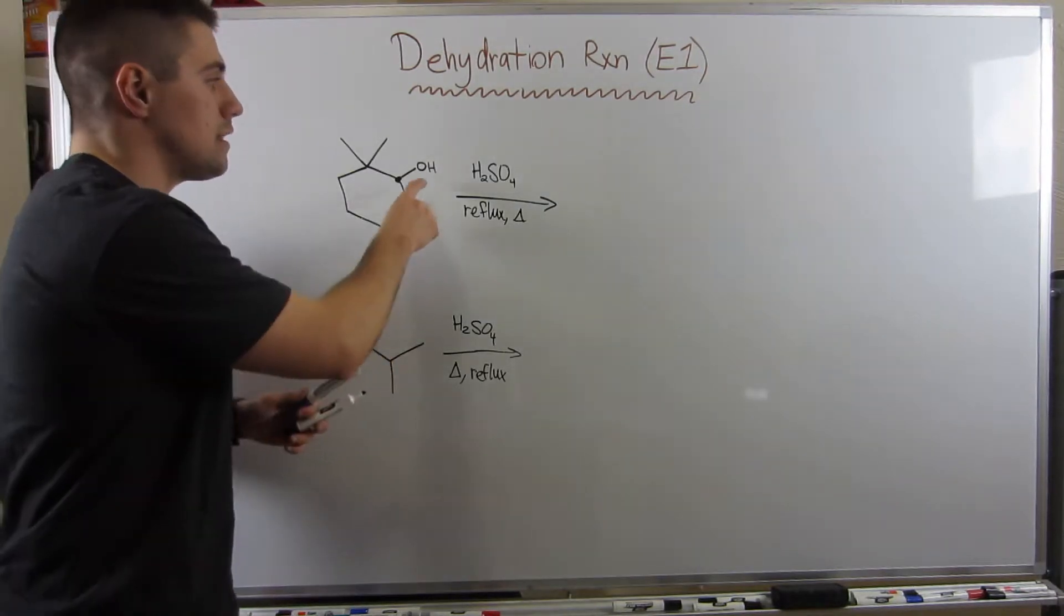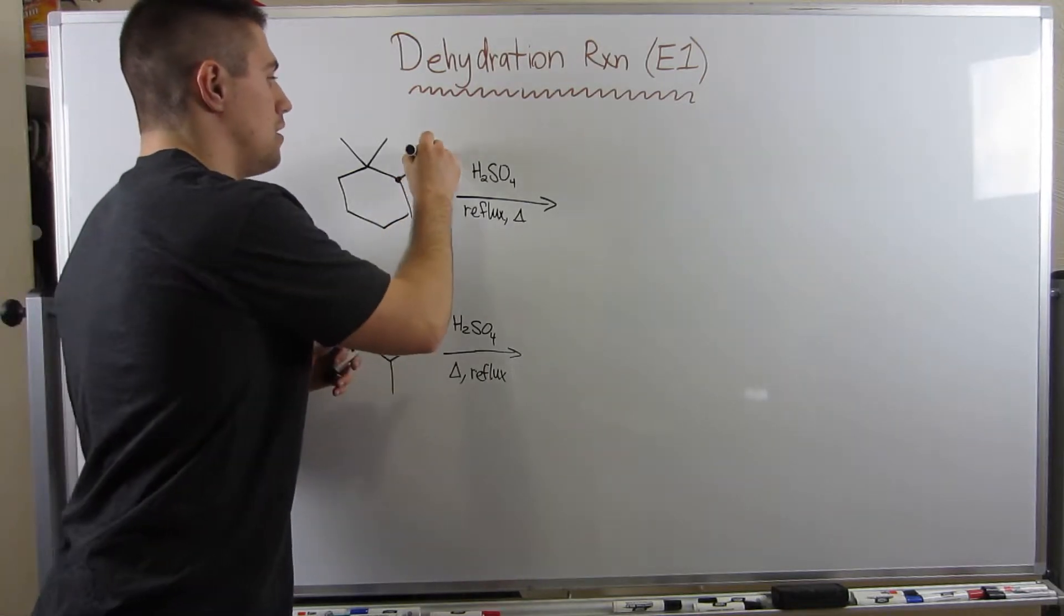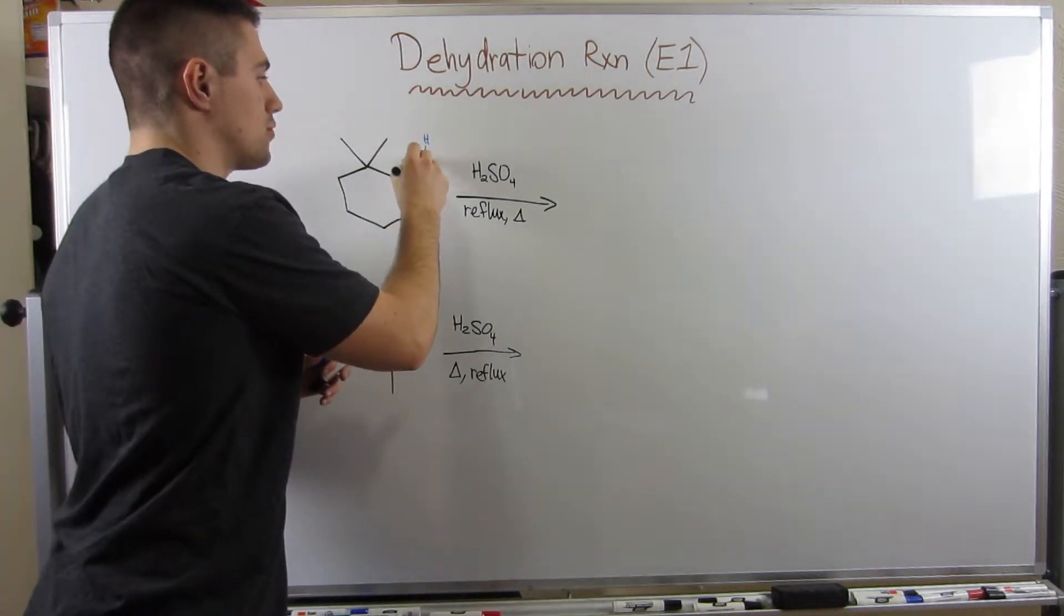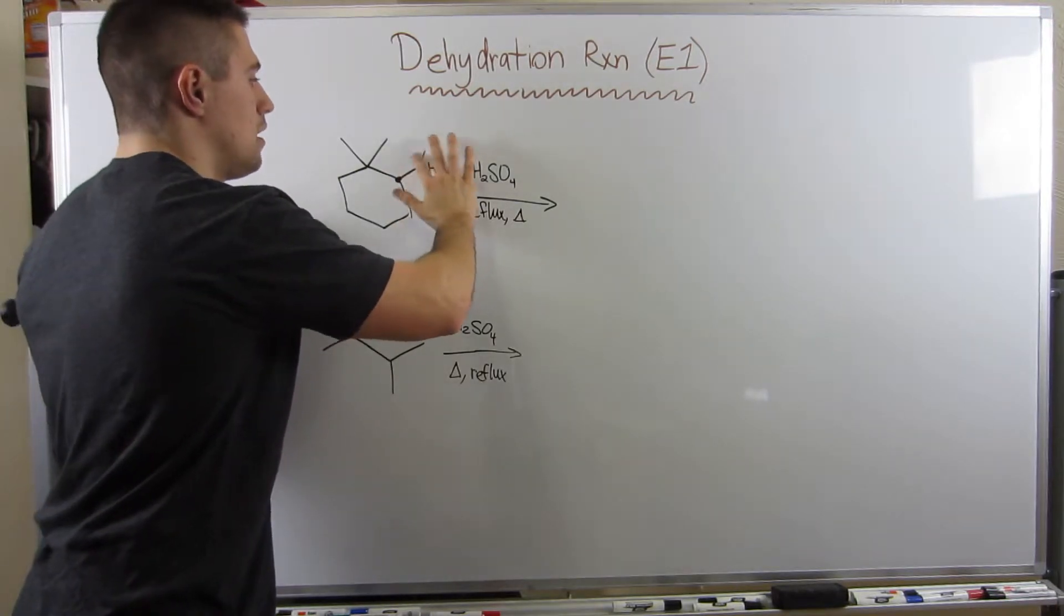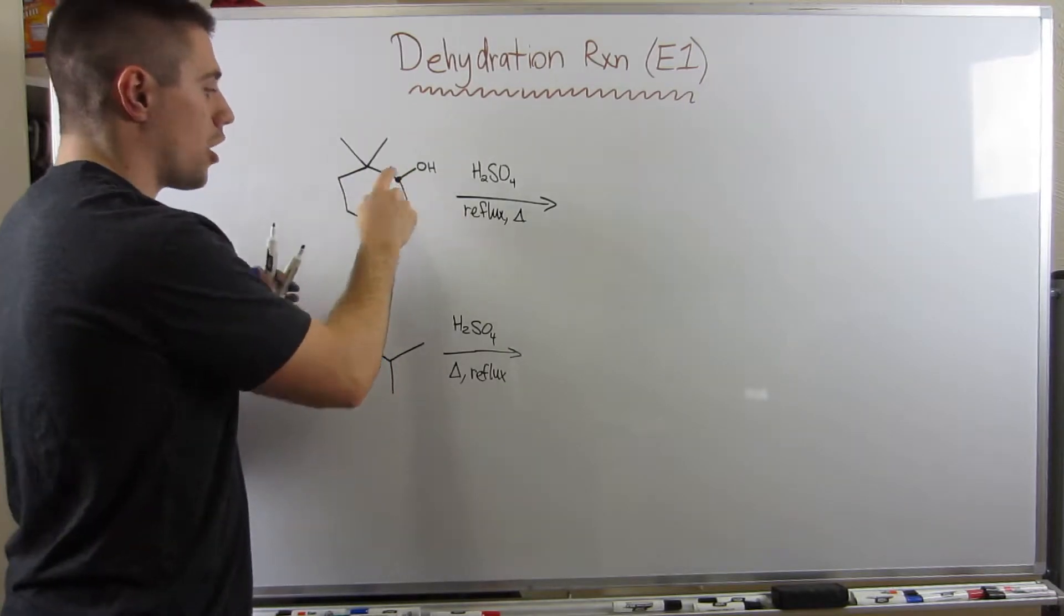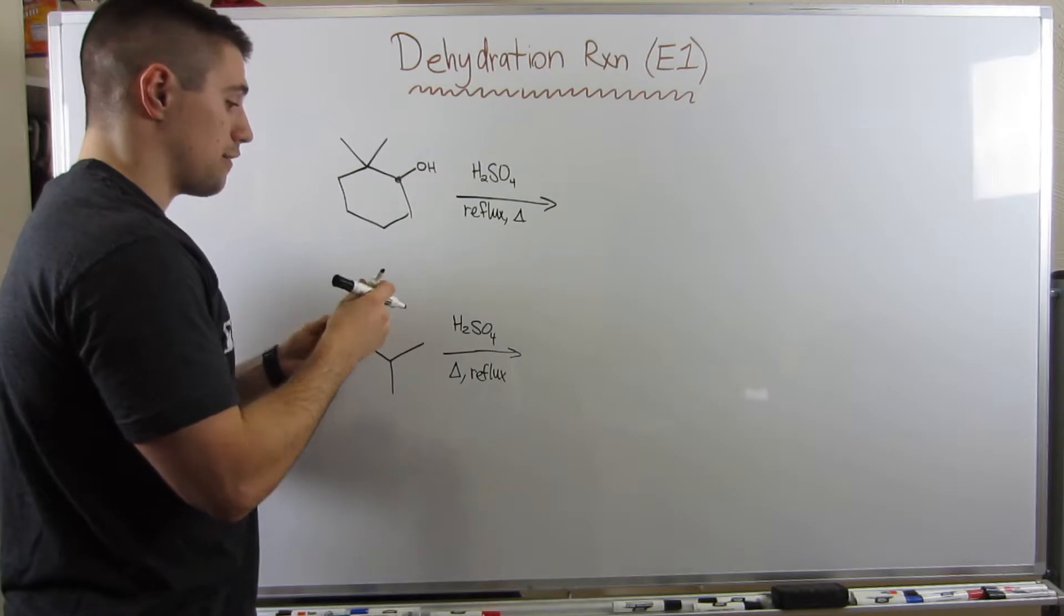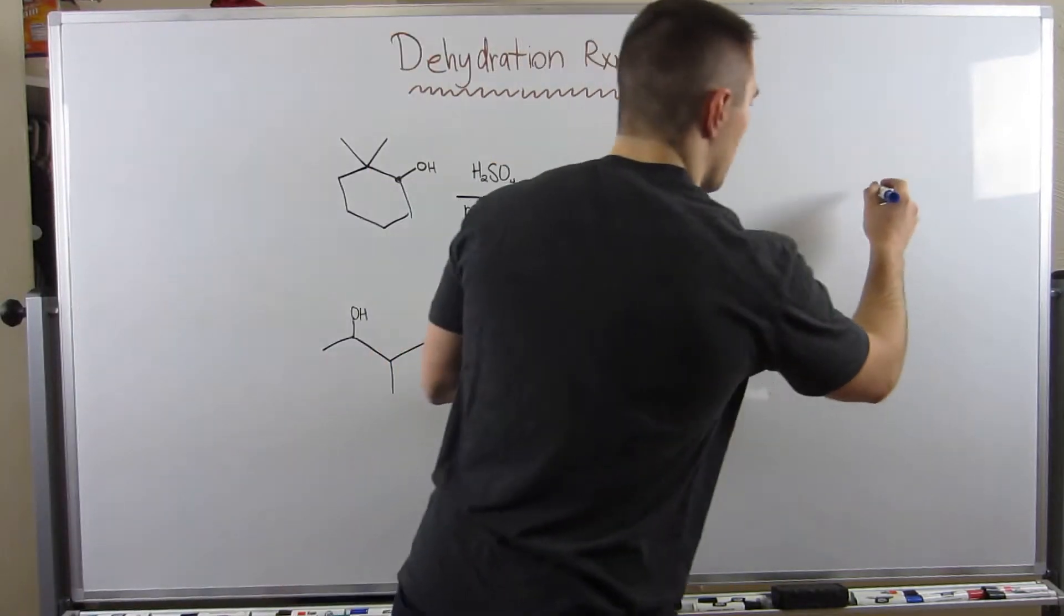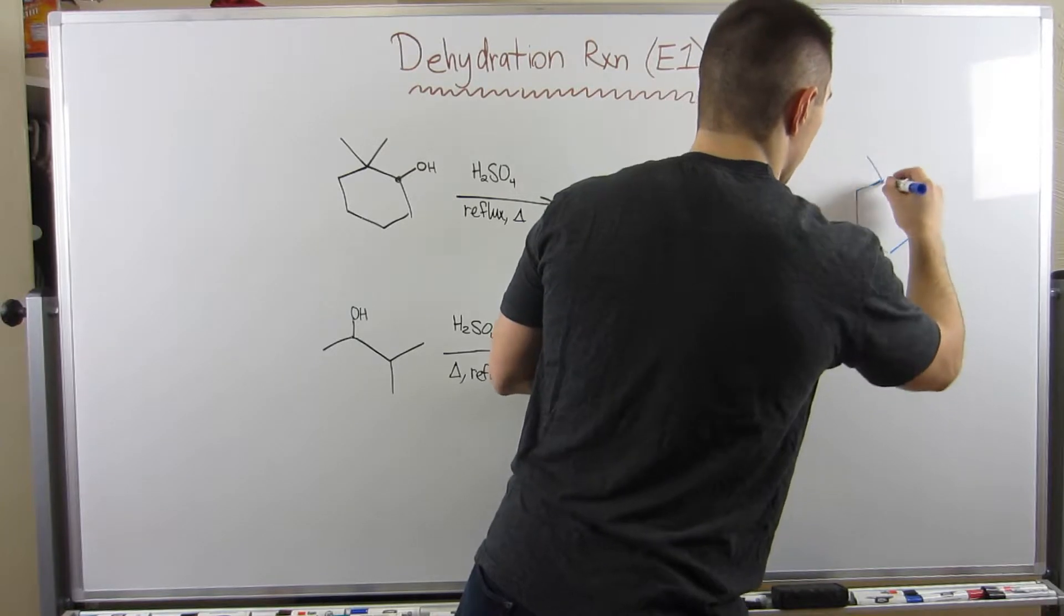You can see we have this secondary substrate, which could form a good carbocation attached to an alcohol. Then we have H2SO4 reflux and heat. We think to ourselves, ah, classic dehydration reaction going to give us some type of elimination product through an E1 mechanism. So remember, we're going to protonate this alcohol, giving him another hydrogen and a plus formal charge. That makes him a good leaving group.